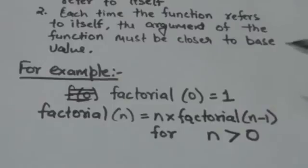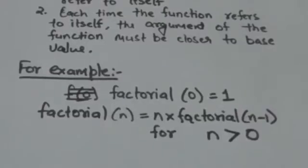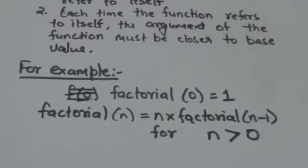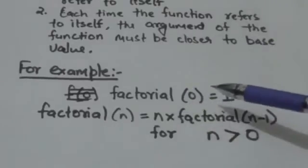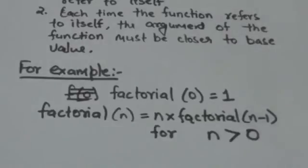Here factorial function is recursively defined. 0 is the base value because when argument is 0, factorial function does not refer to itself. It gives output 1.